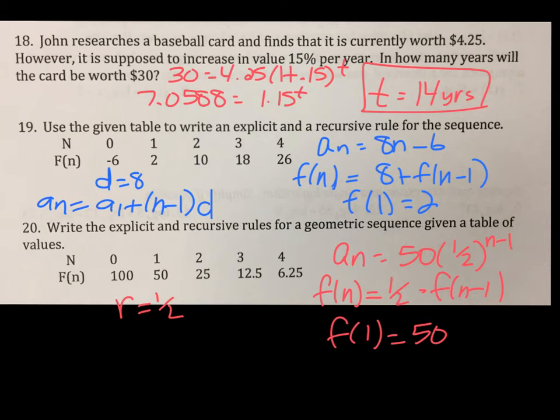19 is arithmetic because it's increasing by 8. And there's the recursive. Remember, f sub n minus 1 is recursive. You're just adding 8 every time. I have 8n minus 6 here. That's a shortcut. The shortcut is whatever d is is always going to be in front of your n. And then let's look at the first term. It's 2. What would you do to 8 to get to 2? You would subtract 6. That's the shortcut for explicit. 20 is geometric. There's the explicit formula for geometric. It's the first term times r to the n minus 1 power. And there's the recursive, 1 half times the previous term.